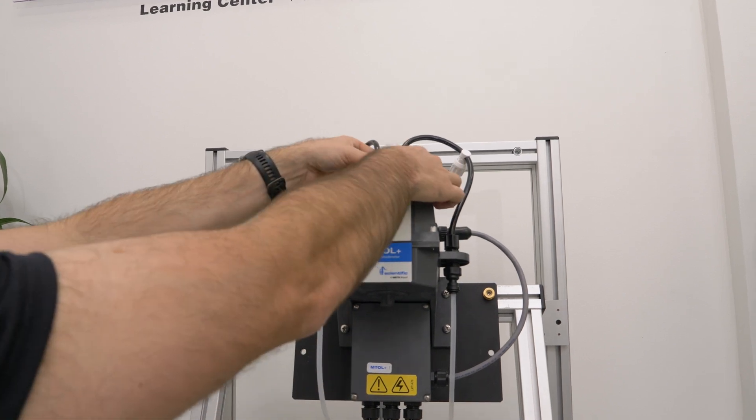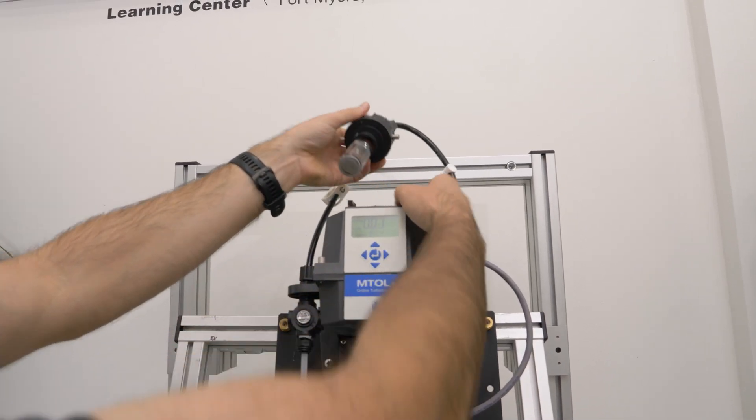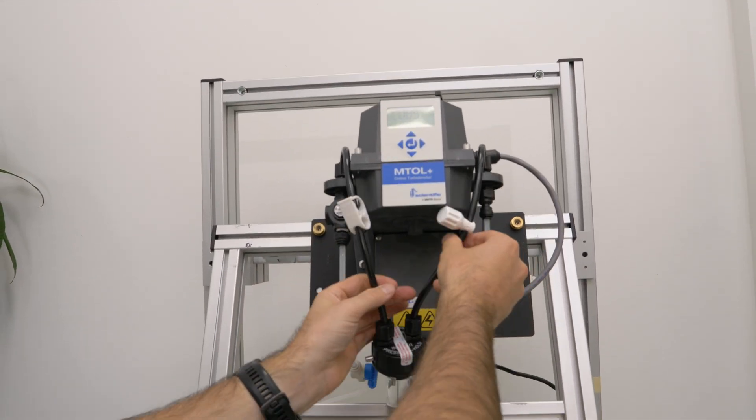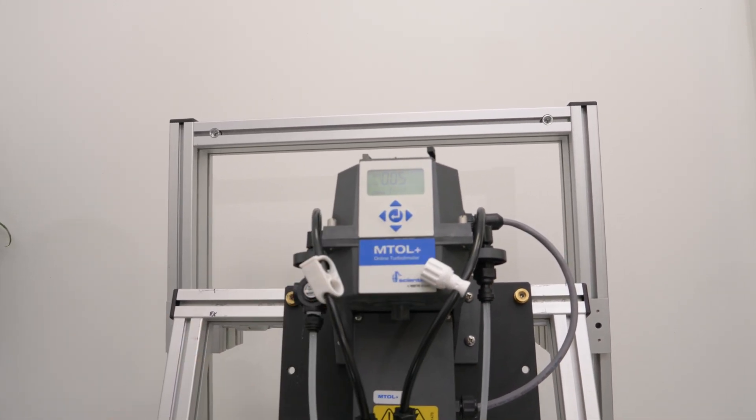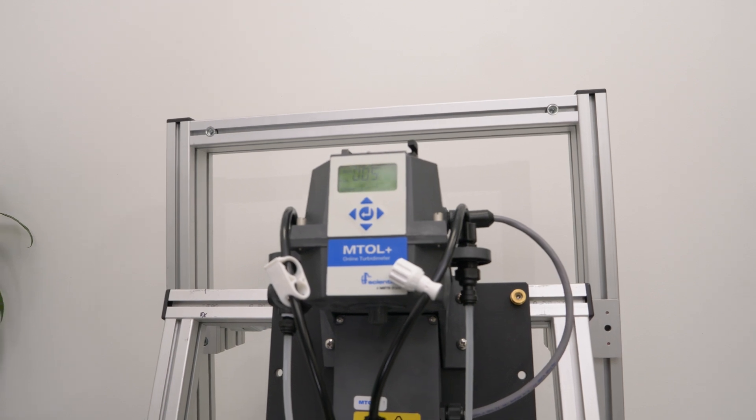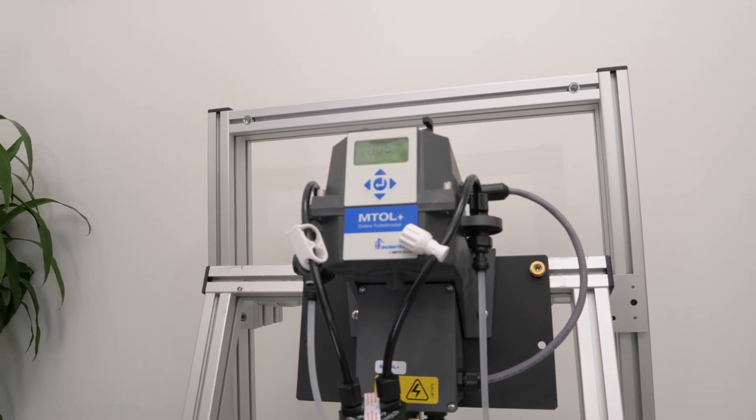Place the instrument in calibration mode by using the down arrow to highlight the cal mode on the instrument, and then press the enter key. The bottom of the screen will flash with the standard the instrument is requesting.